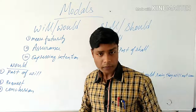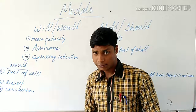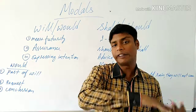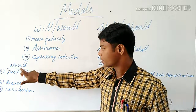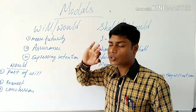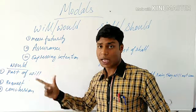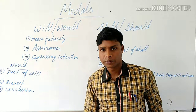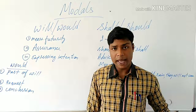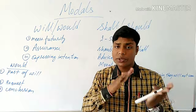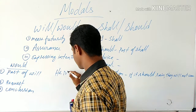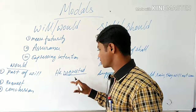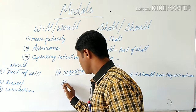Now let us see the use of would. Would is the past form of will. It is used in requests. For example: 'I told him that I would come soon' or 'He requested me that he would give me the things back.' Since it is already past — he requested — we use would.